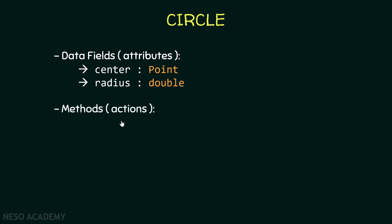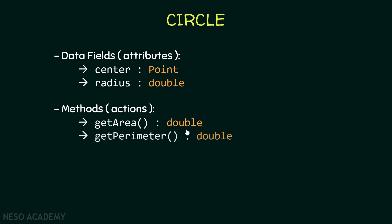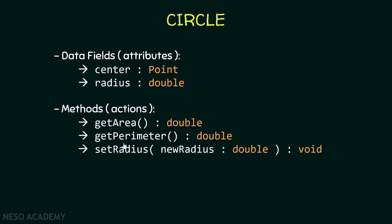Now let's look at some methods or actions. First, we want a method called getArea that returns a double — it should calculate and return the area of the circle. Similarly, we want a getPerimeter method that returns the perimeter of the circle. We also want a method called setRadius that takes a new radius as a parameter, which is a double.